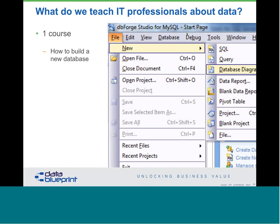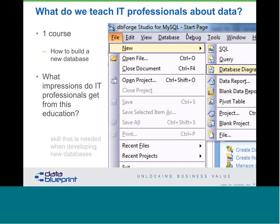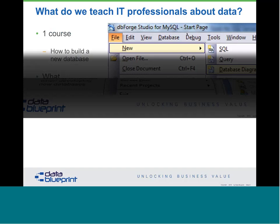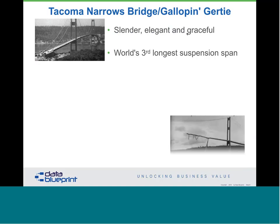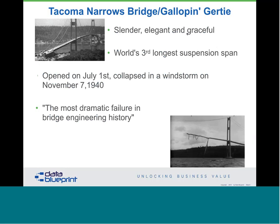When we teach IT professionals about data, it's even worse — we teach them how to build a brand new database, giving the impression that only IT professionals with data experience are needed when building new databases. There are a lot more things that we do. The real key is that unlike some major failures — and I'm going to show you a major failure in a moment — data are really more problematic. Here's the Tacoma Narrows Bridge, fairly famous. It was opened on July 1st of 1940 and collapsed on November 7th — called the most dramatic failure in bridge history.